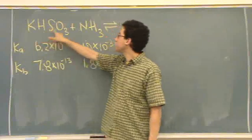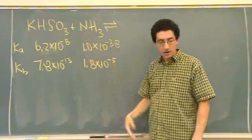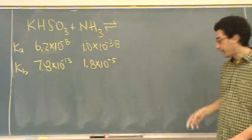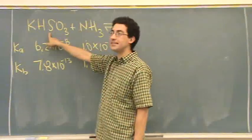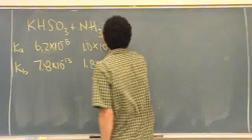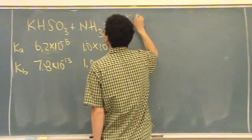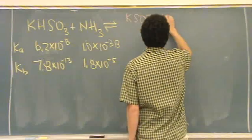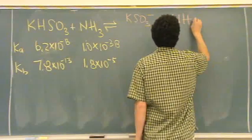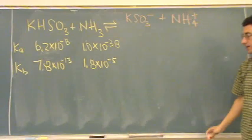This one could give this proton here. So, I'll write, there's two possible answers that it could be. Let me write down both possible answers. One possible answer is this is the acid. If that's the acid, you get KSO₃⁻ plus NH₄⁺. That's one possible answer.